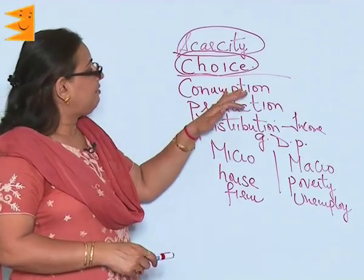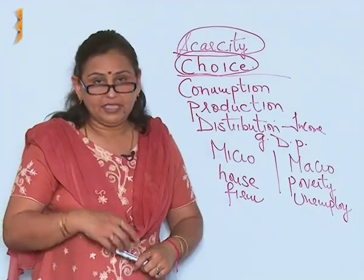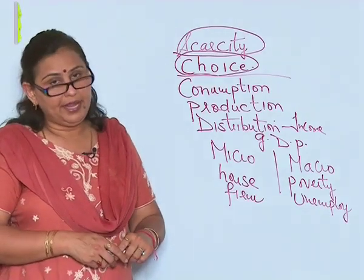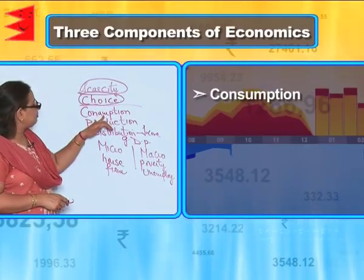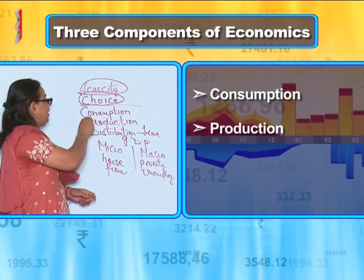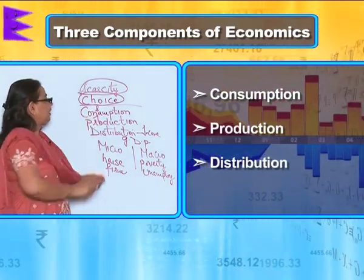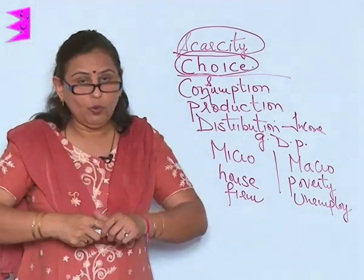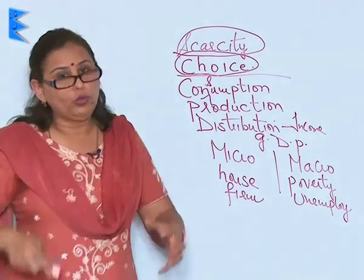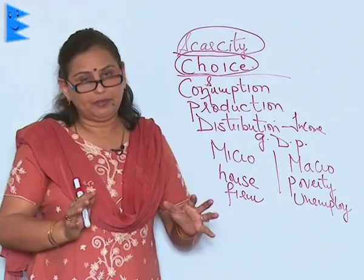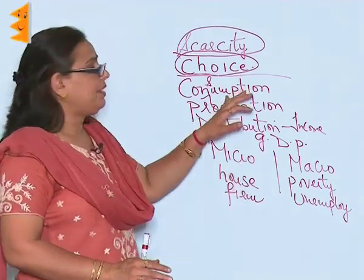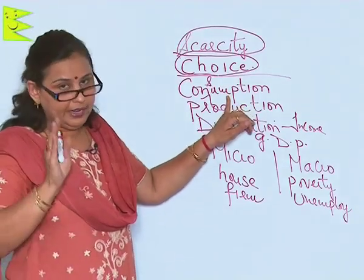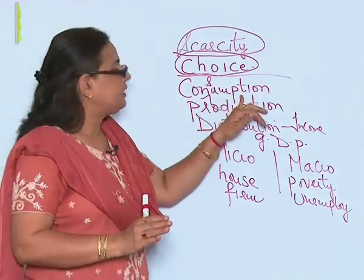Now, the three factors of the study of economics, or rather on which economics is based, are consumption, production, and distribution. When I talk of consumption, consumption is what we consume, what we intake, what we use. An ordinary person, whatever he is making use of, in a layman's term, is consumption.